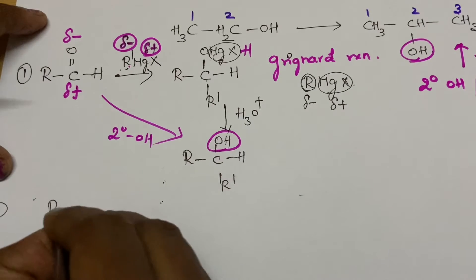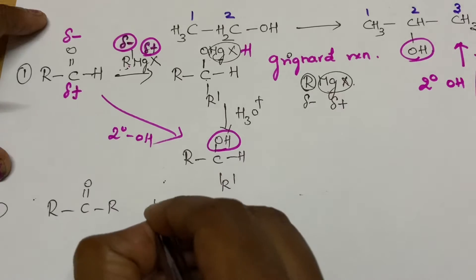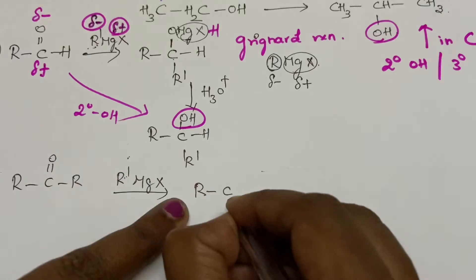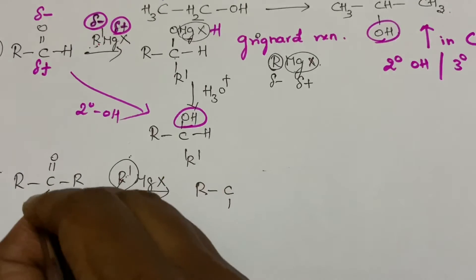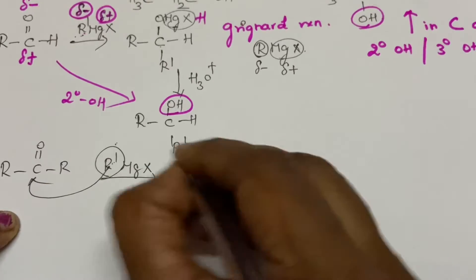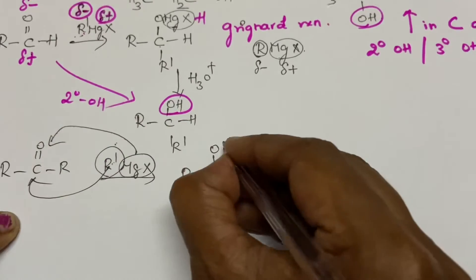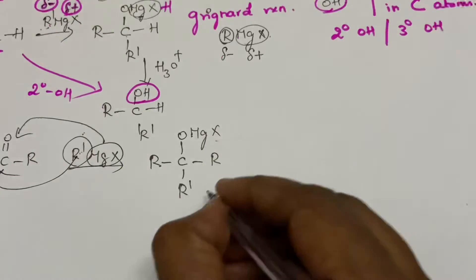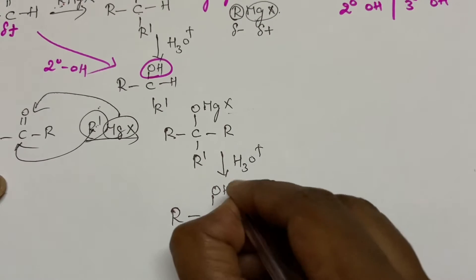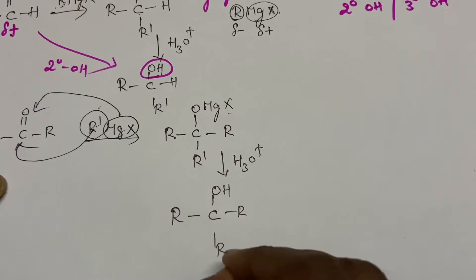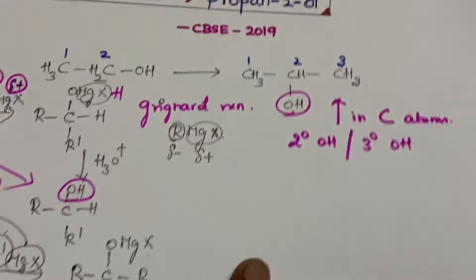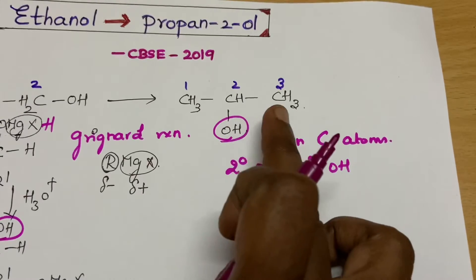Similarly, with a ketone, the R' group attacks the carbonyl carbon and MgX attacks the oxygen. Followed by hydrolysis, you get the tertiary alcohol. So ketone plus Grignard reagent gives a tertiary alcohol.